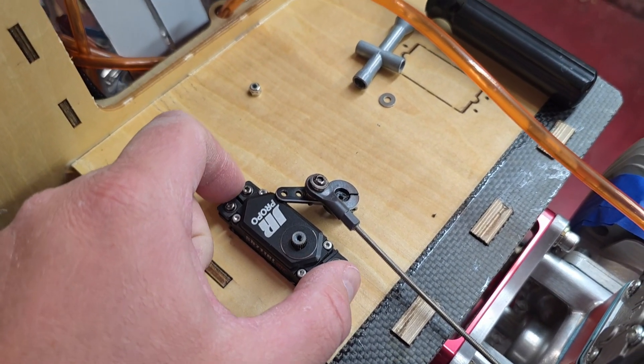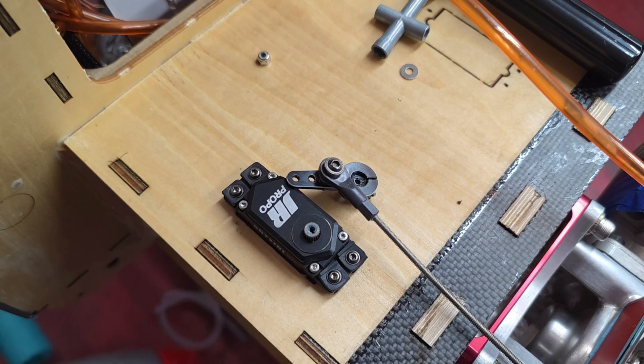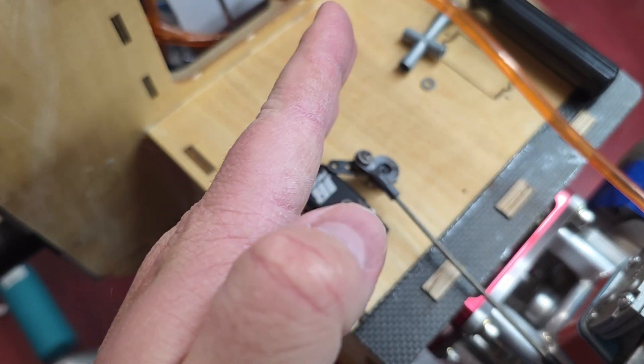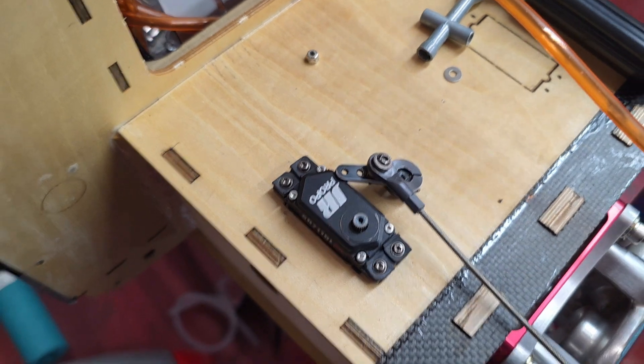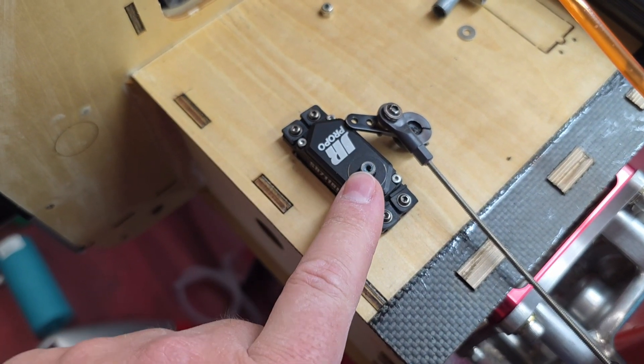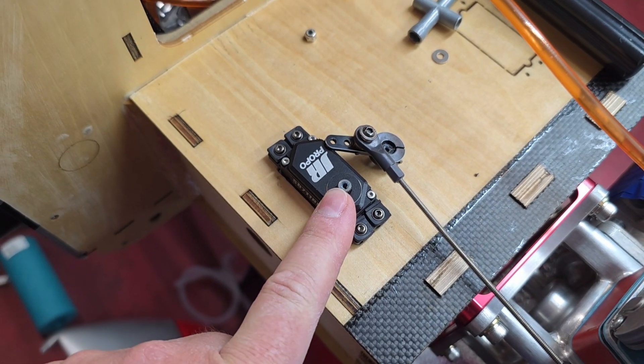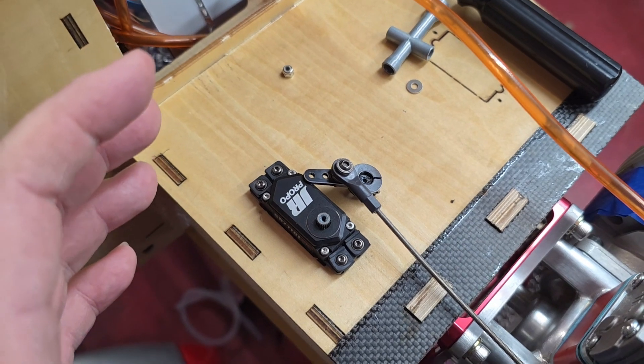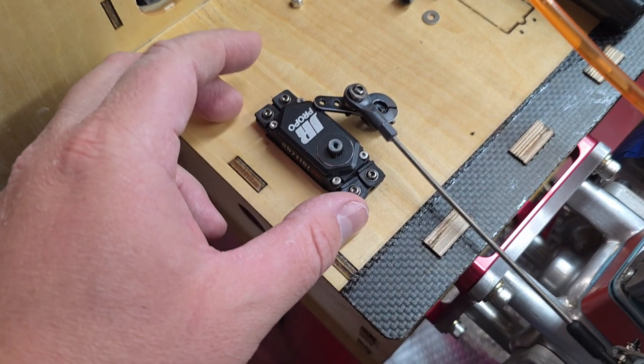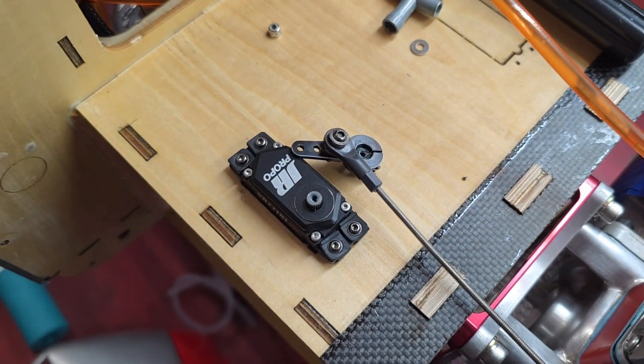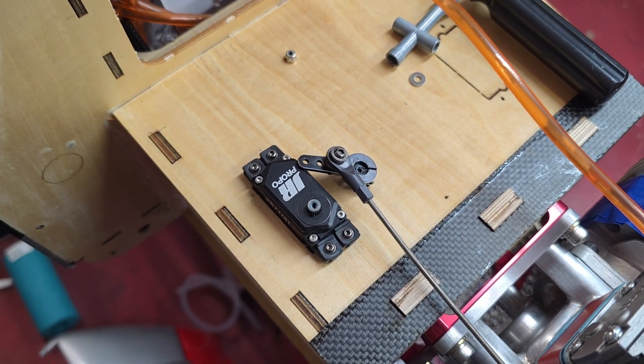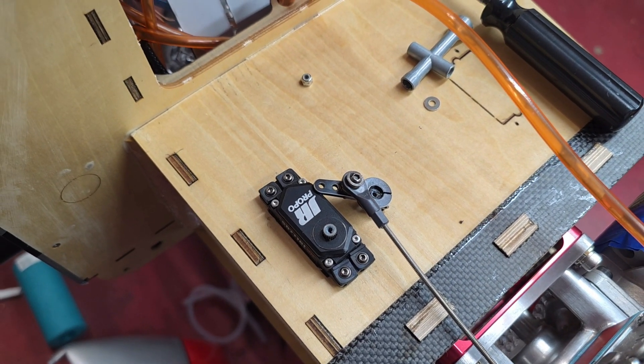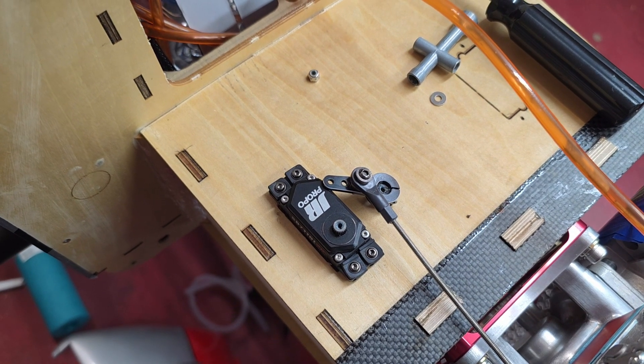That way you can use more travel in the servo and you can increase the resolution being used. So each servo has a certain amount of steps in each of its rotation. The more travel you use on your servo, the more of those steps you get in that range, which means that the servo will be a lot more precise. Very similar to using the shortest arm possible on your control surface to maximize the resolution of your servo.